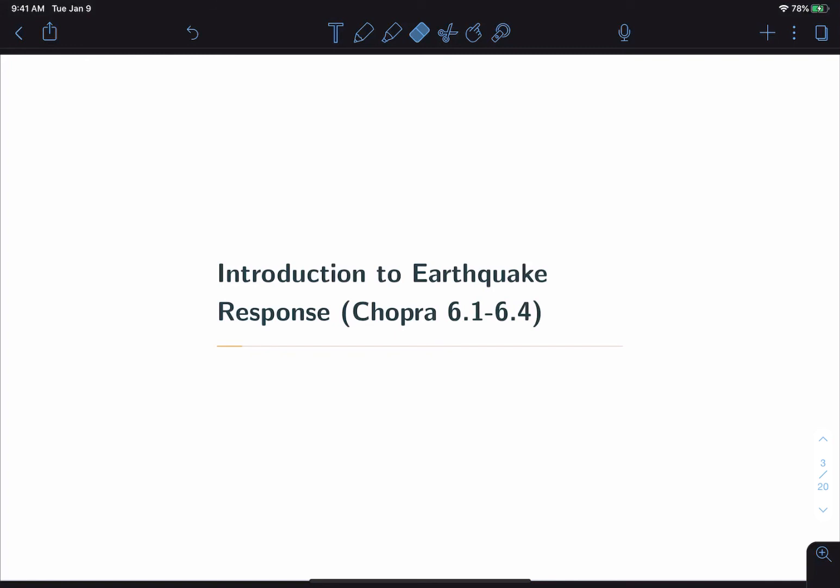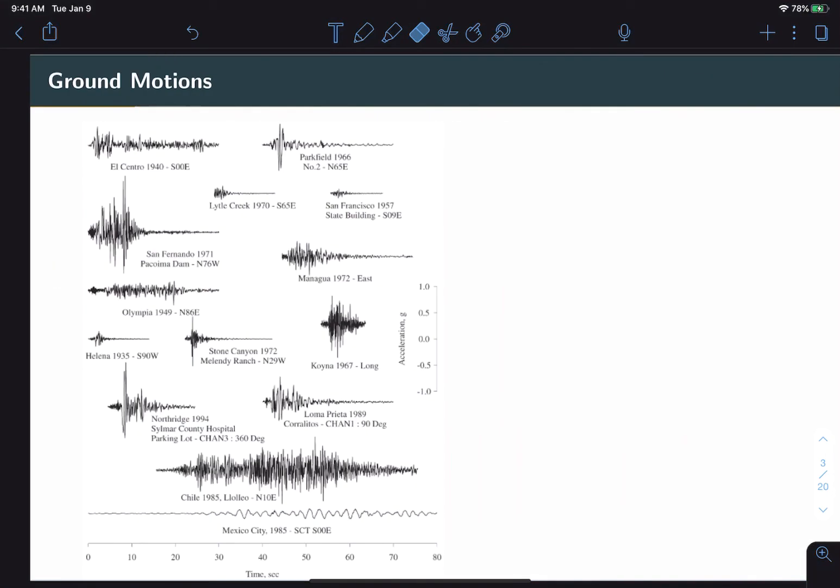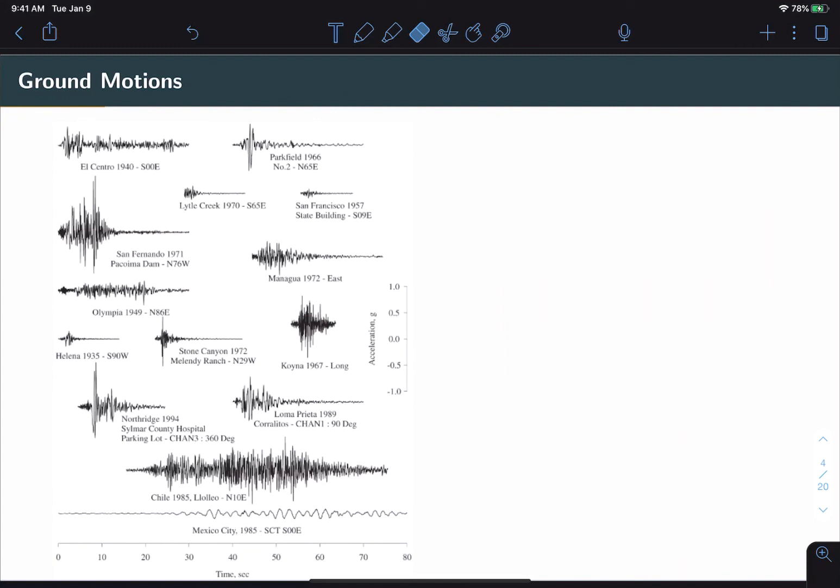So, let's start with a brief introduction to earthquake response. Ground motions are measured through an accelerograph, sometimes called a seismometer. These are electronic instruments which measure either ground acceleration or ground velocity. These are much easier quantities to measure than ground displacement. And for the entirety of this unit, we will focus on measured ground accelerations.